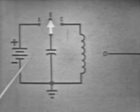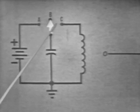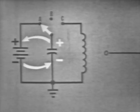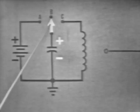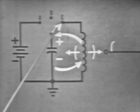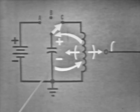If we flip the switch to A, the capacitor charges to the battery voltage. Move the switch to B, and the capacitor is disconnected from the power supply, though it is still fully charged. When the switch is moved to C, the capacitor will start to discharge through the coil, causing current to flow in this direction.